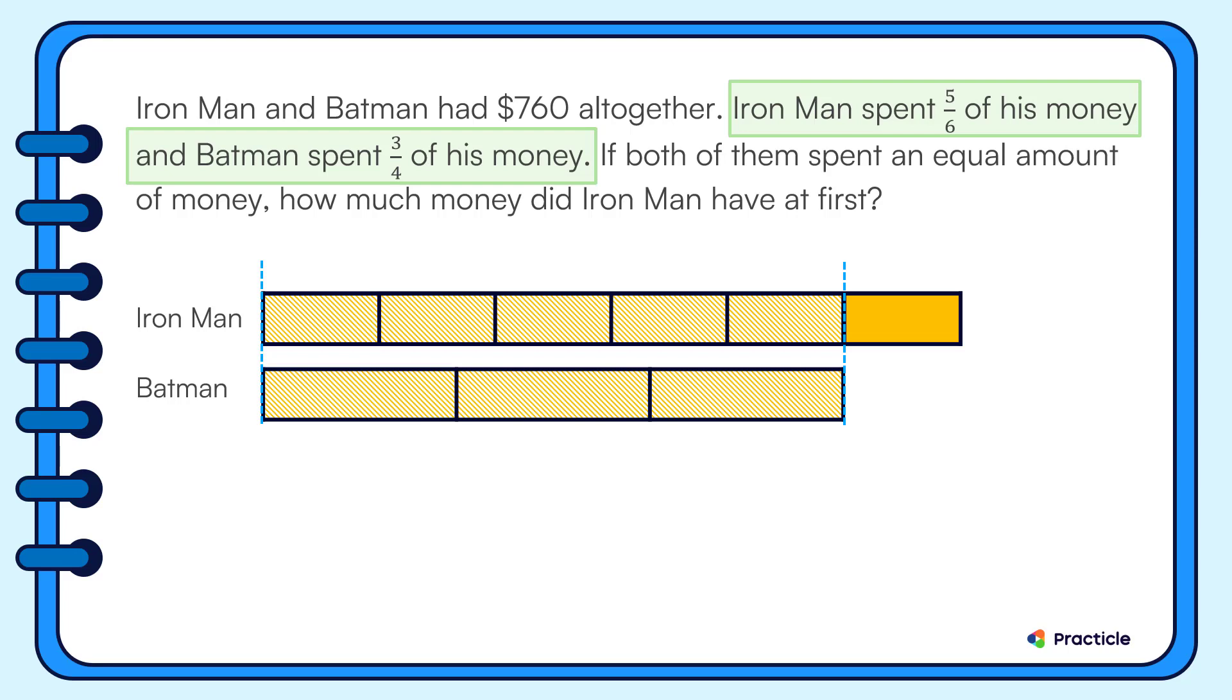This makes it easier for us to draw the bar to represent the total amount of money that he had. This is already three out of four of Batman's units, so let's add in one more unit for Batman to represent the total amount of money that Batman had. Well done, everyone! If you've been following so far, we're done with the hardest part of drawing this model.